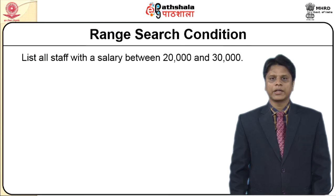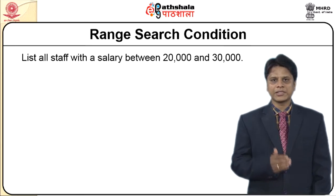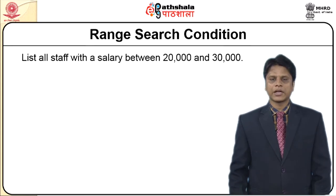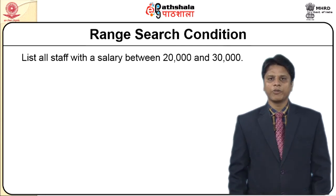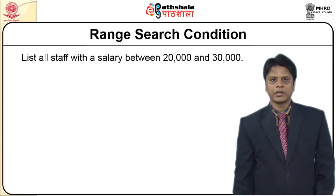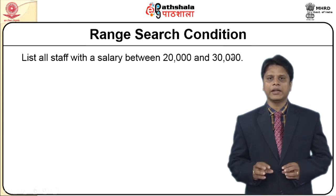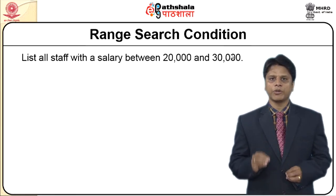To start with, range search condition. In a range search, there should be a start and an end which will be defined. In a compounding condition, either this or that should have been indicated. Here I define my limits — the natural language query is: list all staff with a salary between 20,000 and 30,000. So anybody drawing a salary between 20,000 and 30,000 should be listed.